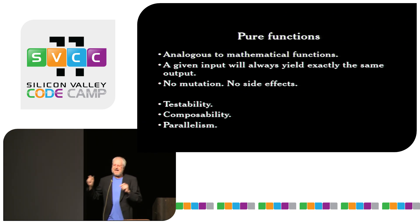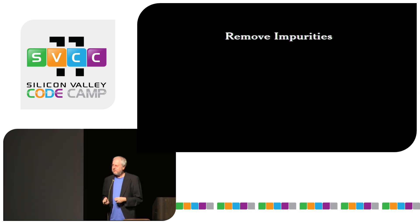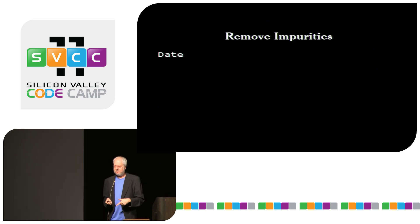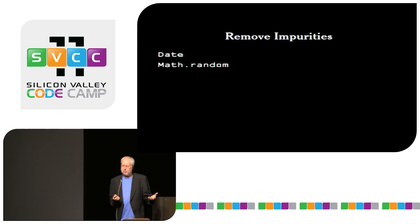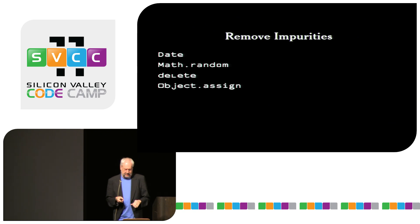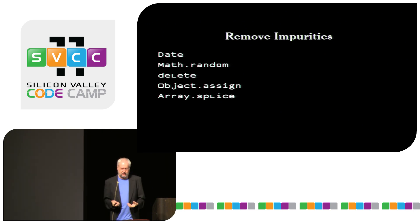What do we need to add to JavaScript to get pure functional programming? Turns out we don't need to add anything — it's got everything. We just need to remove the impurities. First we need to remove the global Date function, because every time you call Date you get a different answer. Math.random also has to go for the same reason. We need to remove the delete operator and things like Object.assign because they can modify an object. We get rid of Array.splice and all other methods of array which can modify an array — we're not allowed to change them, we can only make new things.